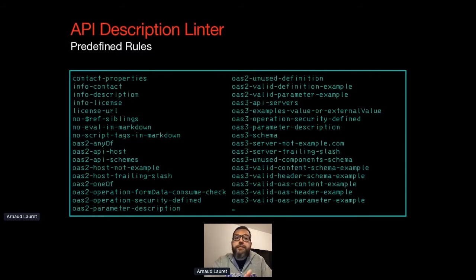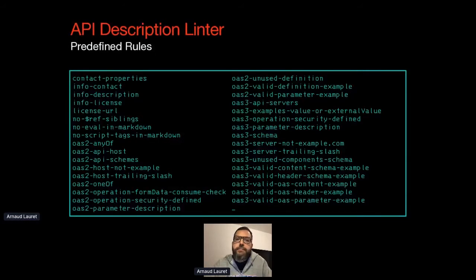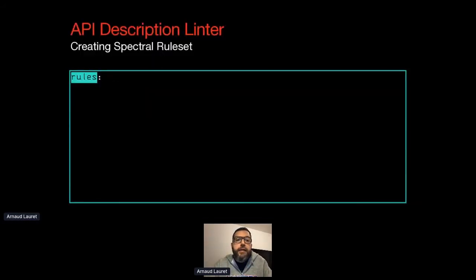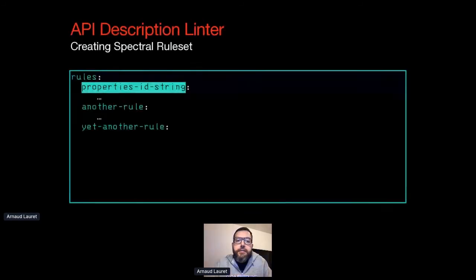Spectral is able to detect some problems right out of the box, without providing any other information than the API description file. For each problem you get its location, its level, the rule that detects the problem, and a human-friendly description of the problem. Spectral comes with a fine set of rules specifically made to analyze OpenAPI documents. Obviously your guidelines are probably not the same as the ones bundled in Spectral, and you can design your own rules to check that an API design conforms to your guidelines. The Spectral rule set is a YAML file containing a rules property.